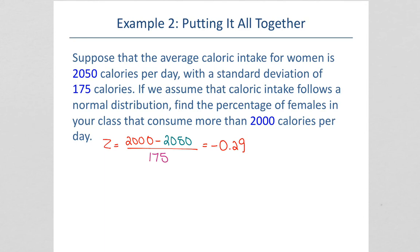Now, we're trying to find the percentage of females that consume more than 2,000 calories per day. We want a percent. All we've got is the z-score.